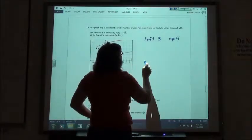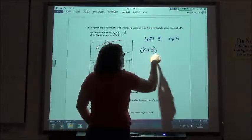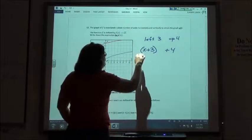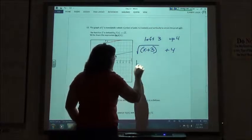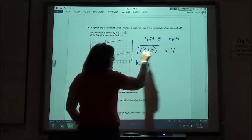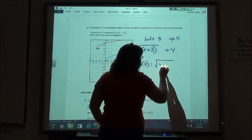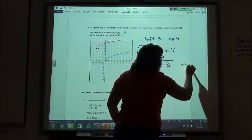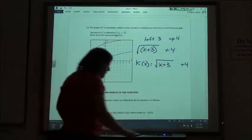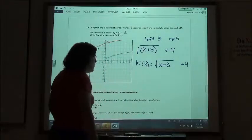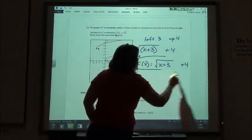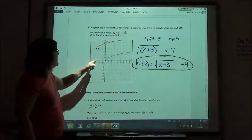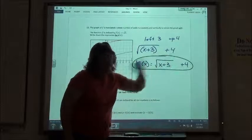So left 3 means I have to have x plus 3. Up 4 means a plus 4. This one has a square root over the x part of it. So again, for k of x, since this is under the square root, we really don't need the parentheses. But I have the square root of x plus 3, and on the outside of the square root, make sure you hit the space bar and get off of the square root, the plus 4 is going to go on the end. So my new equation that shifts 3 to the left and up 4 is x plus 3 and plus 4.